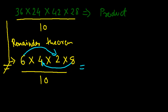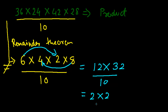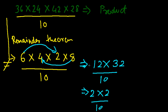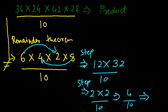You can multiply any two numbers first. For example, 6 × 4 = 24 and 2 × 8 = 16. Taking remainders when divided by 10 gives 4 and 6. Then 4 × 6 = 24, giving a remainder of 4. Alternatively, we can group them differently; either way we get 4 as the final remainder, which is also the unit digit of the entire product.